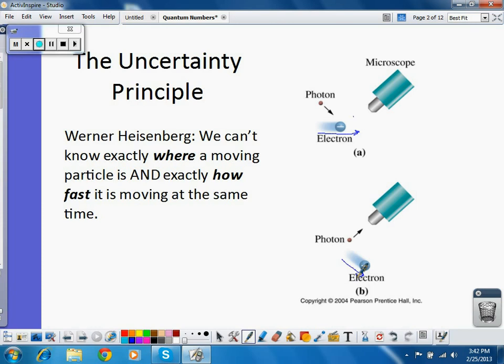So scientists had to give up this idea of knowing exactly where an electron is for the idea that we can predict about where the electron might be. So we look more at probabilities of where we can find an electron and not exact locations for electron arrangement.